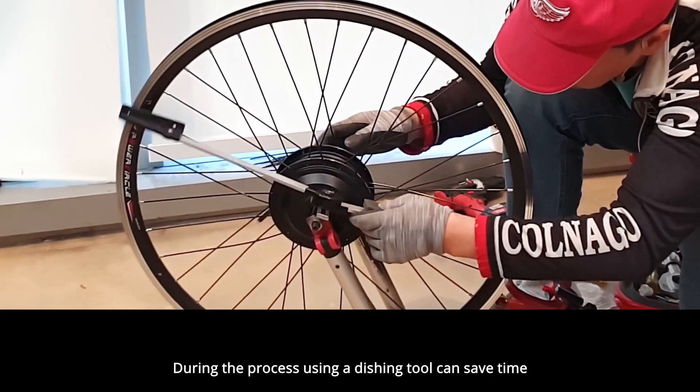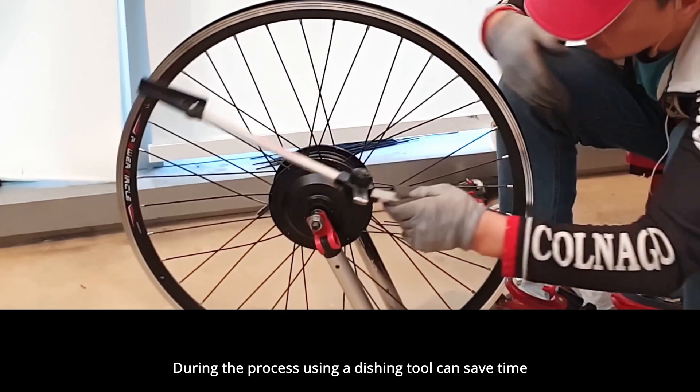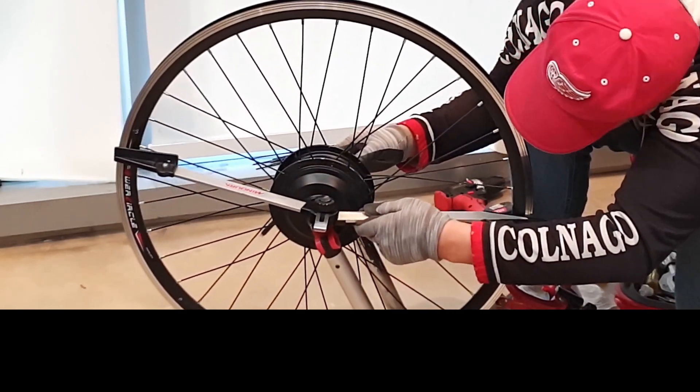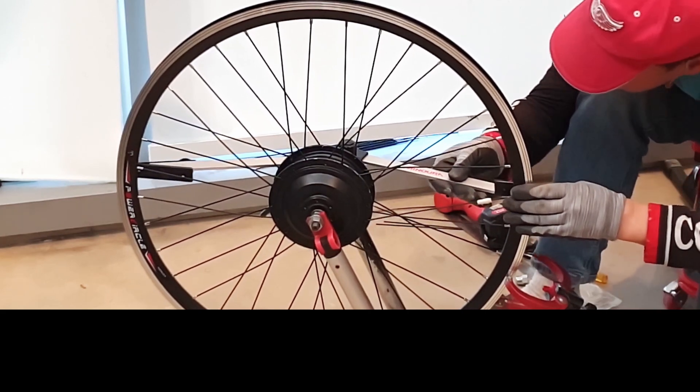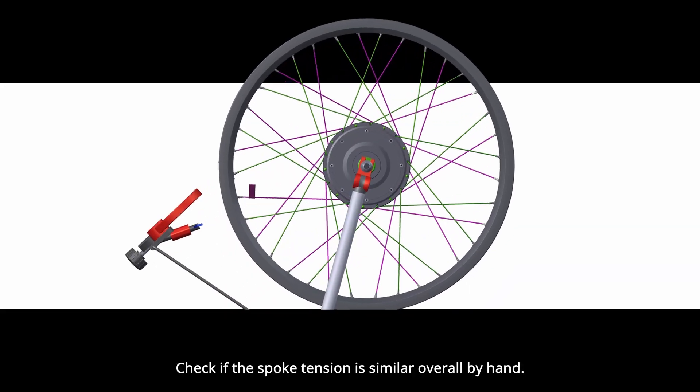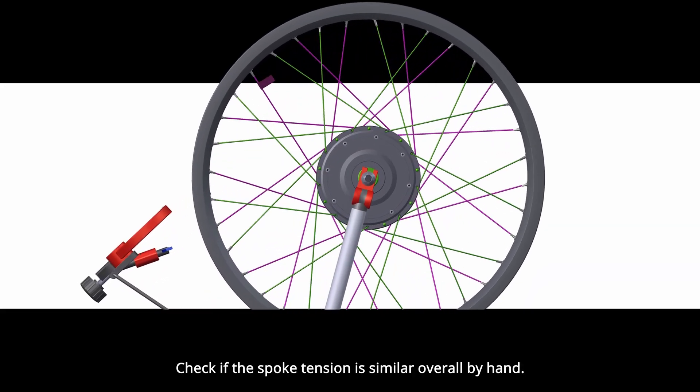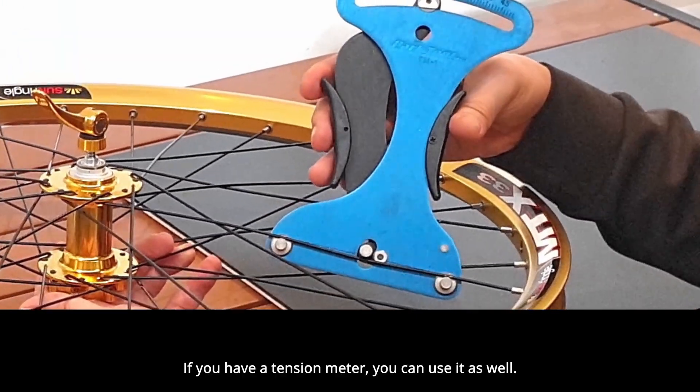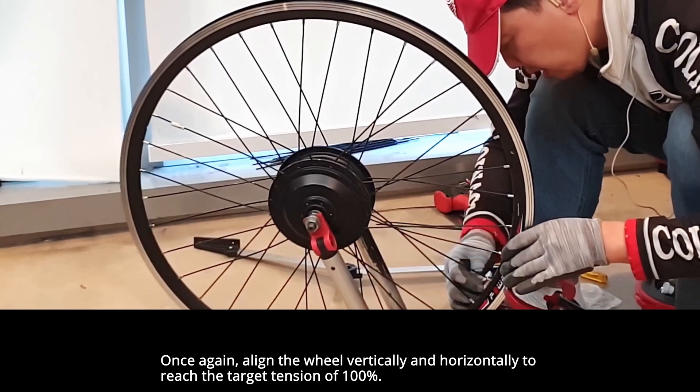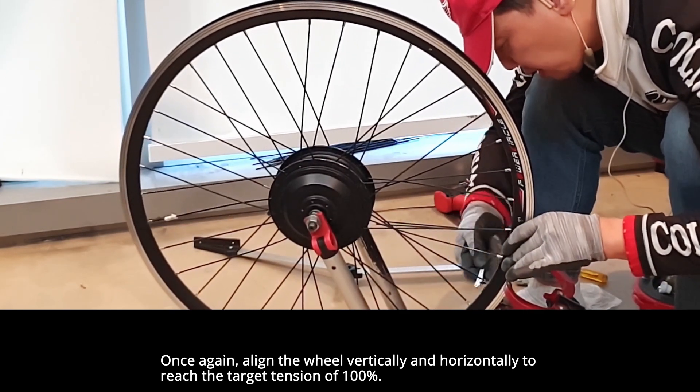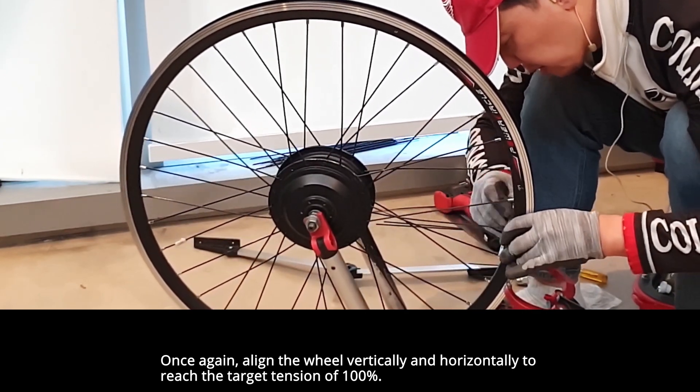During the process, using a dishing tool can save time. Check if the spoke tension is similar overall by hand. If you have a tension meter, you can use it as well. Once again, align the wheel vertically and horizontally to reach the target tension of 100%.